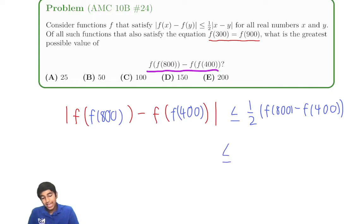So then, if we do that, we get it's less than or equal to 1/2 times 1/2 times, right? There's a half from earlier and then there's a half from earlier and then the inside part will be 1/2 times the absolute value f(800) minus 400.